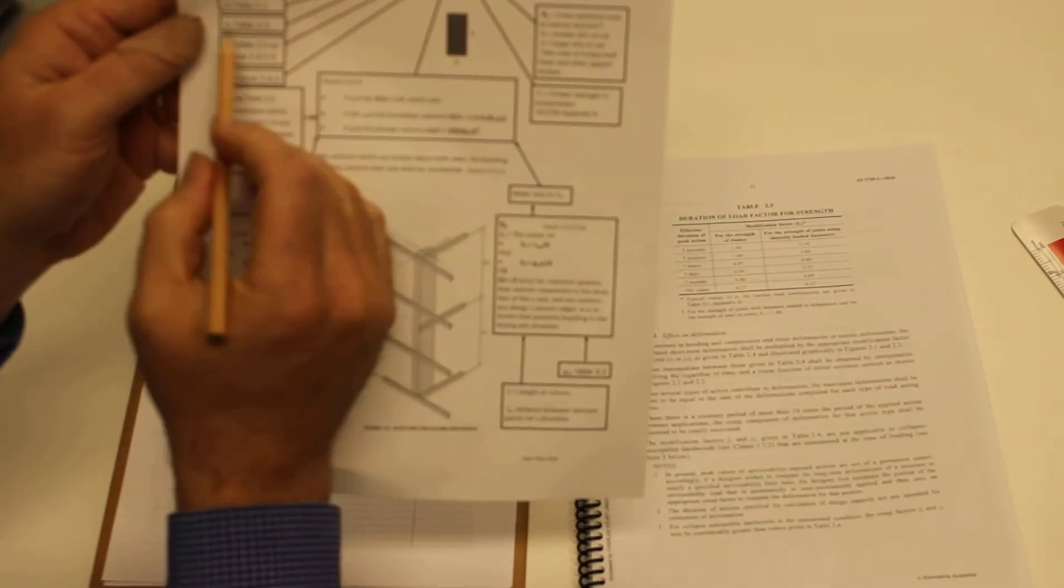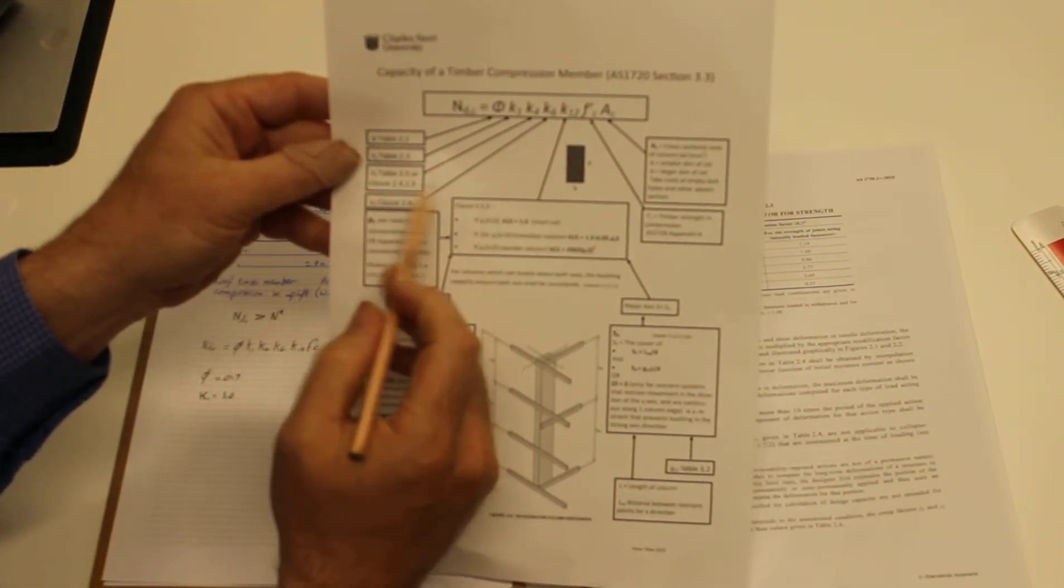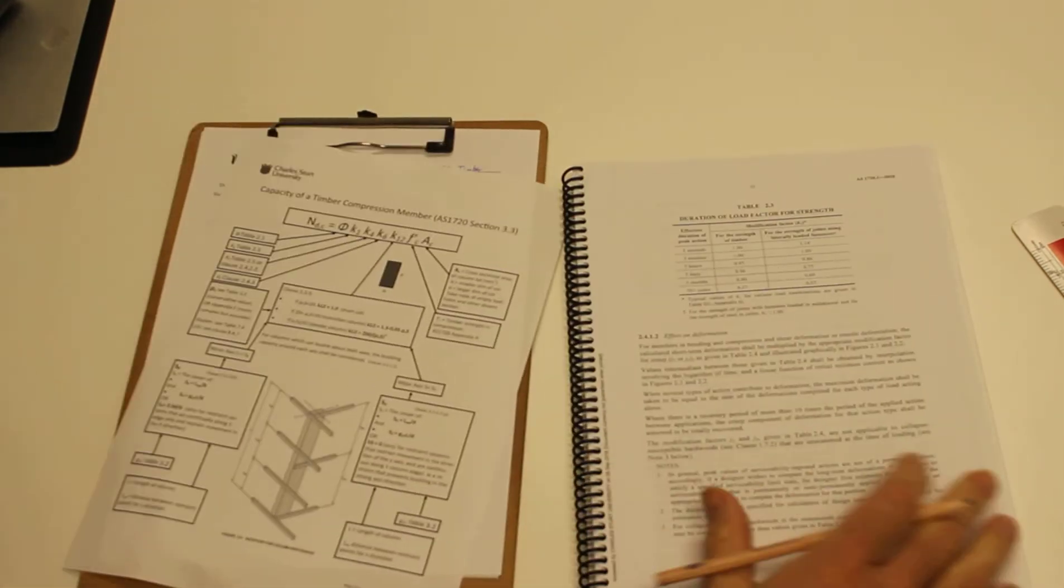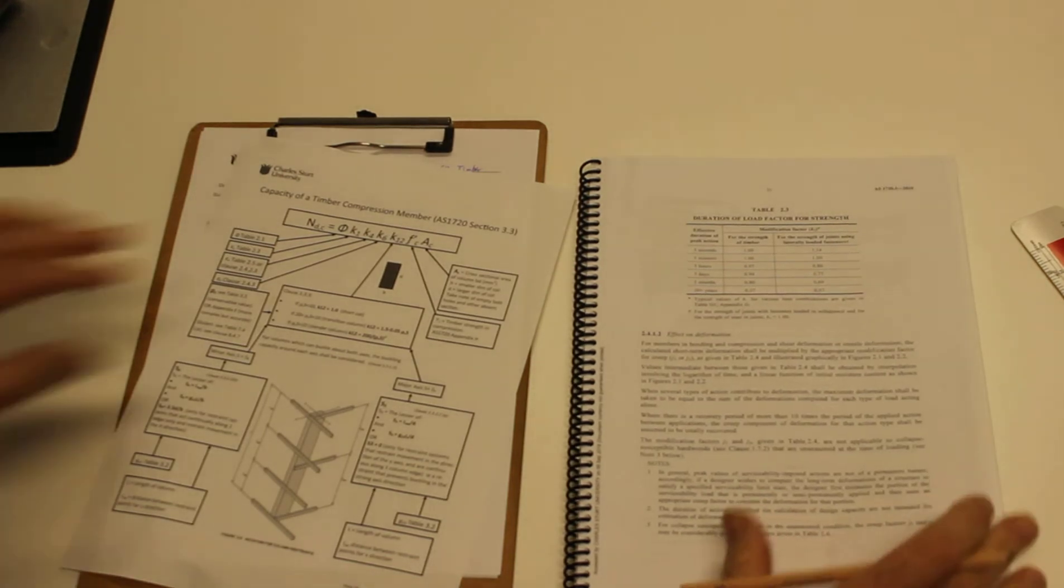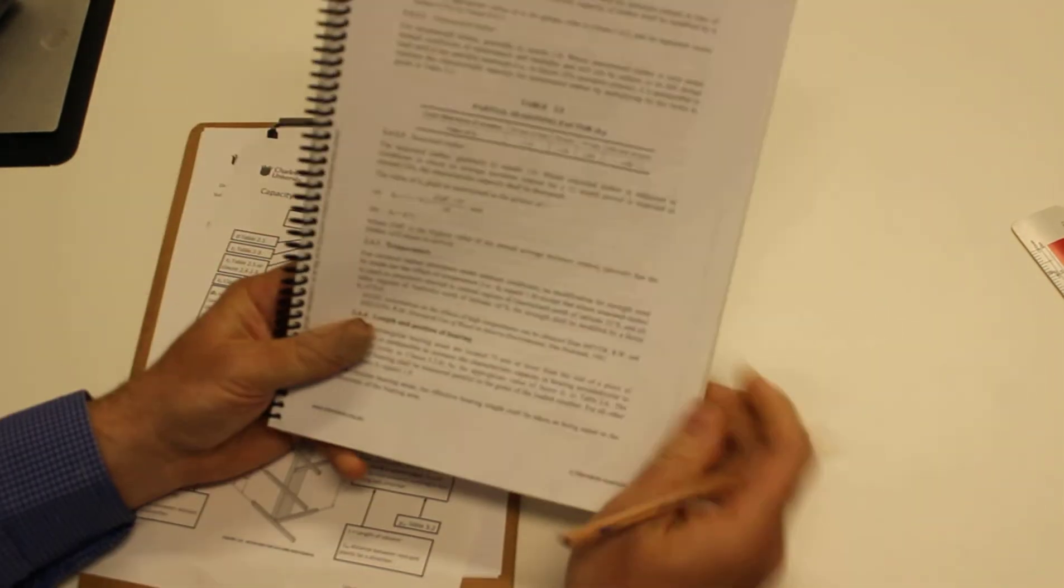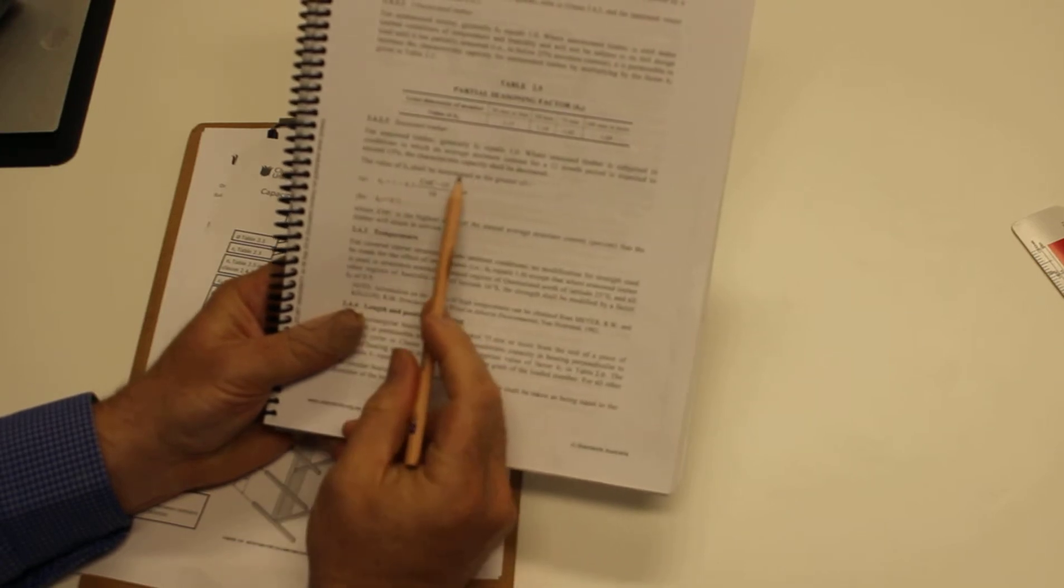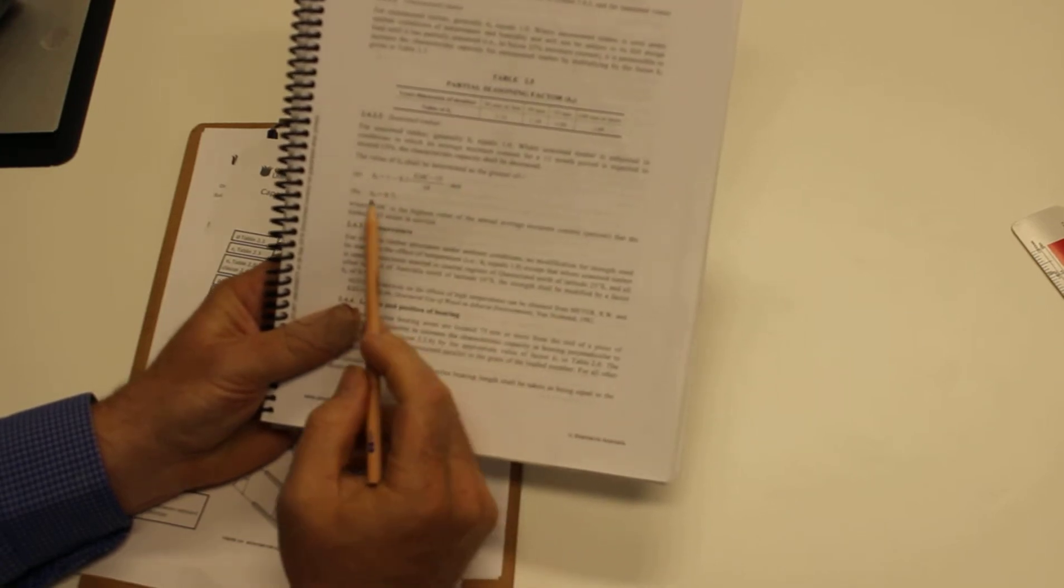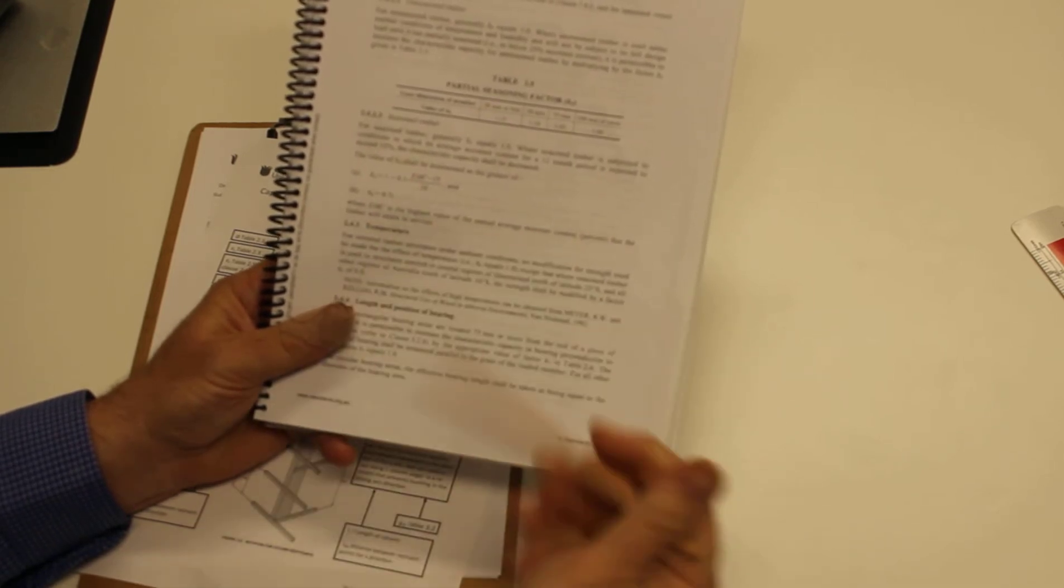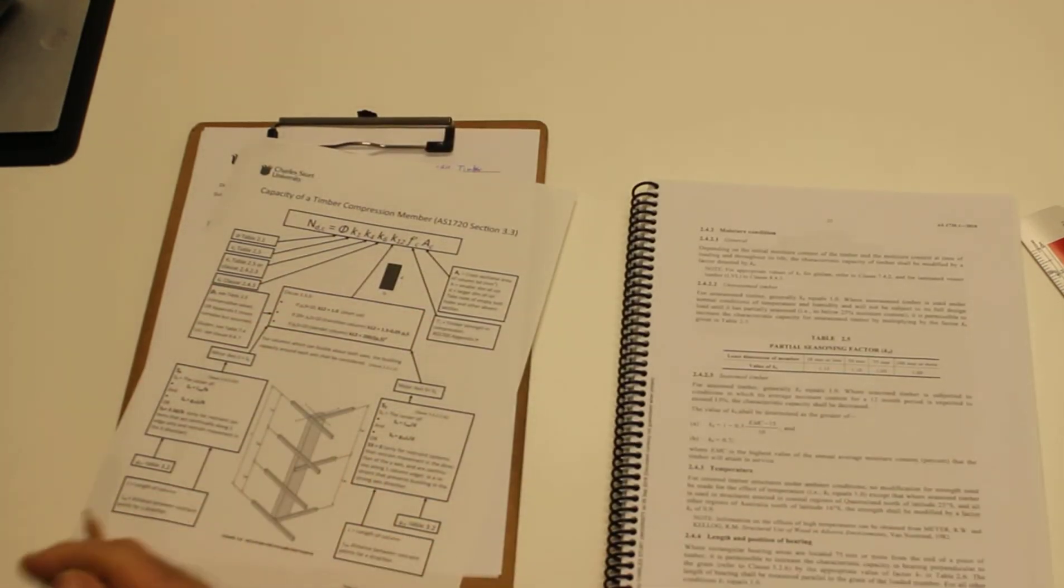Next one is k4, table 2.5 or clause 2.4.2.3. K4 is a partial seasoning factor. Because we have seasoned timber, k4 should be the greater of that minus that. When we're indoors, we're using 1.0 for seasoned timber. Generally k4 equals 1.0. It only gets less than that if we're dealing with humidity and other problems like that. K4 equals 1.0, that's table 2.5.